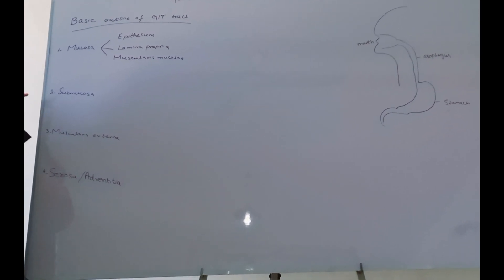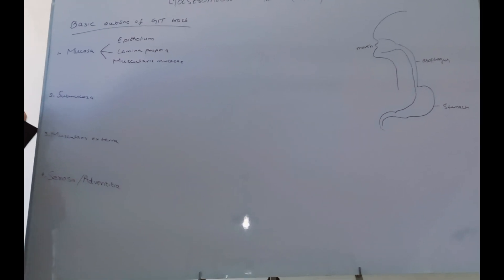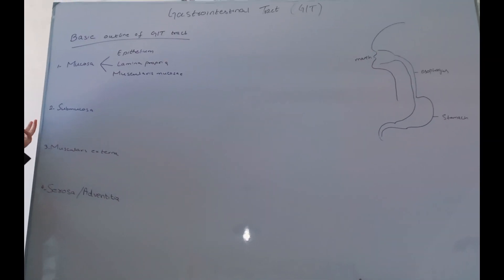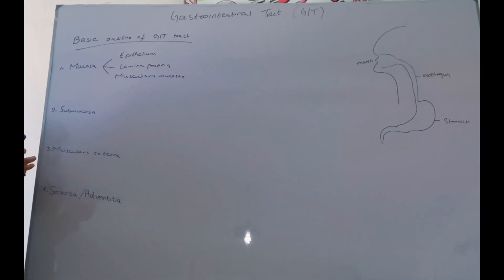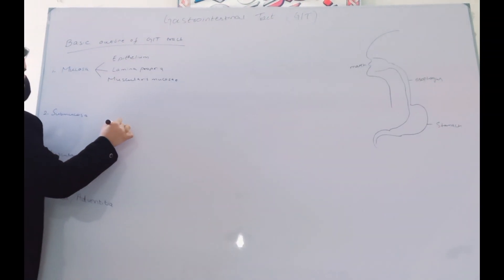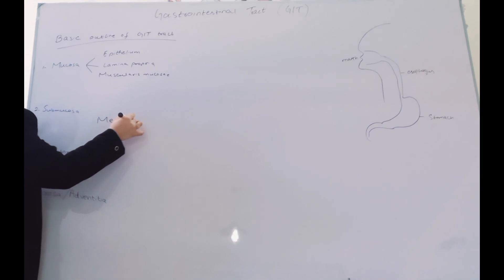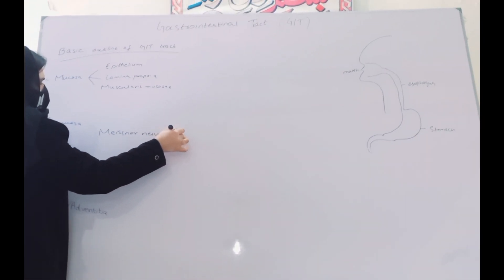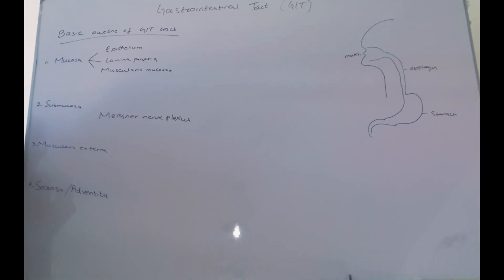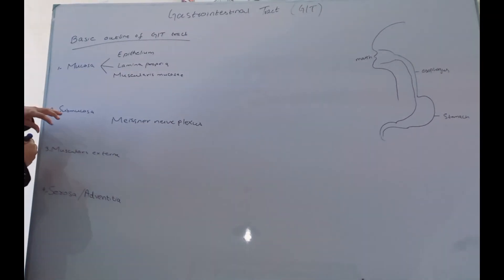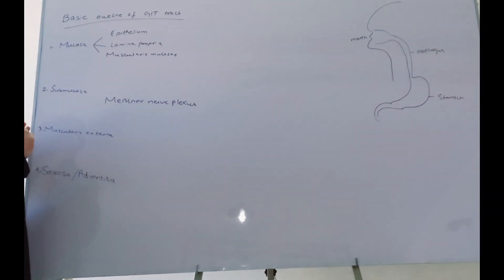The second structure you will find in the GIT is the submucosa. What is submucosa? Again, it is a connective tissue layer where you will find a nerve plexus. The nerve plexus present in the submucosa is known as the Meissner's nerve plexus. You will also find here blood vessels and some glands. Basically, the nerve plexus you will find here is the Meissner's plexus.